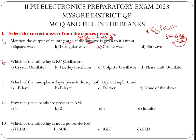Seventh question: Which of the following is an RC oscillator? Crystal oscillator is its own type. Hartley and Colpitts are called LC oscillators. So the correct answer is the phase shift oscillator, because the name itself is RC phase shift oscillator — the feedback network used here is an RC resistor-capacitor network.